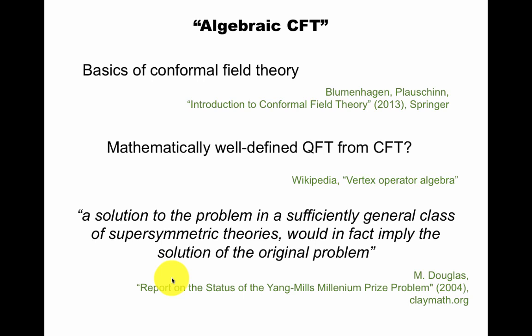I might say in string theory you get usually supersymmetric theories, but as argued by Douglas, a solution to the problem in a sufficiently general class of supersymmetric theories would in fact imply the solution of the original problem. And he's talking about the Yang-Mills Millennium Prize problem to define Yang-Mills theory mathematically. So maybe string theory could help with this kind of discussion.